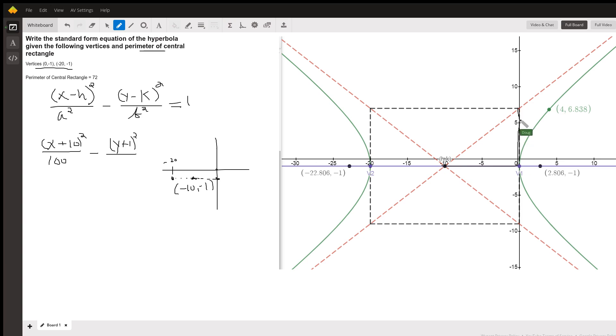Because this vertical distance right here, that's what b is. And this distance is a. So if the perimeter of this rectangle is 72, that means that this distance, which is from negative 20 to zero, is 20.